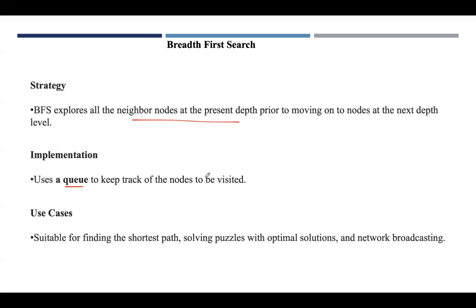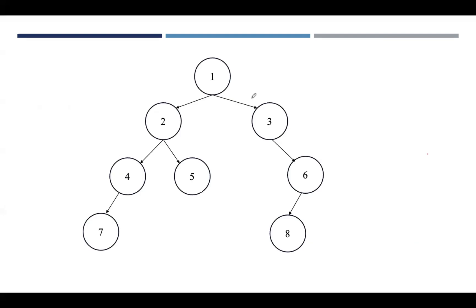BFS visits the nodes in layers, ensuring that nodes closer to the source are visited before nodes farther away. It finds the shortest path in an unweighted graph and generally consumes more memory compared to DFS, as it needs to store all nodes at the current level. BFS is mainly used for finding connected components in a graph, finding the shortest path, solving puzzles with optimal solutions, and network broadcasting.